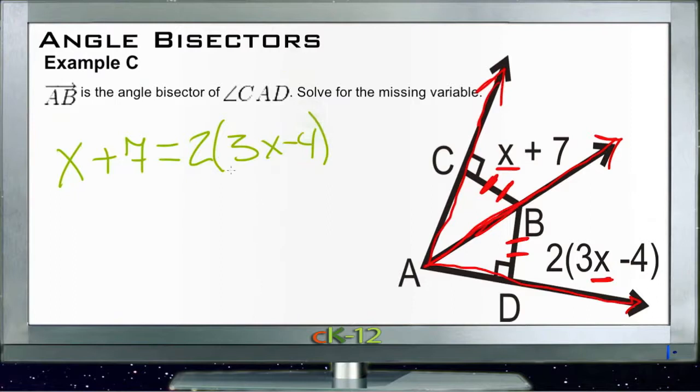So now we just need to solve for x. First we'll distribute that 2. We get 2 times 3x, that's 6x. And 2 times negative 4 is negative 8, is equal to x plus 7.